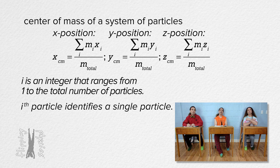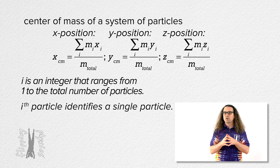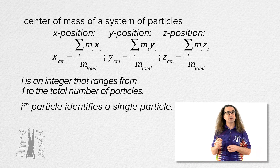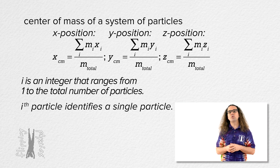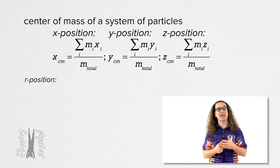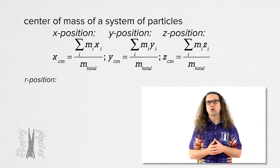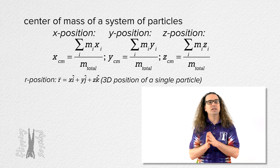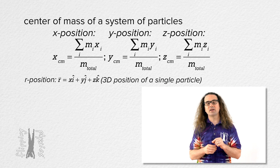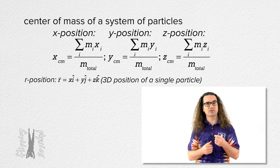You're welcome. Now, we do not actually have to use three separate equations to identify the three-dimensional position of the center of mass of a system of particles. Instead, we can use the r position vector and unit vectors. Recall that the position of a single particle can be defined as position vector r equals x times unit vector i plus y times unit vector j plus z times unit vector k.